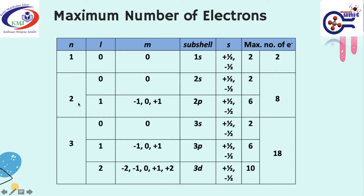When l is equal to 1, m is equal to negative 1, 0, and positive 1. So we have three different orientations. Three different orientations means you have three orbitals. Each orbital can hold a maximum of two electrons. So you have six as the maximum number of electrons in three different orbitals.